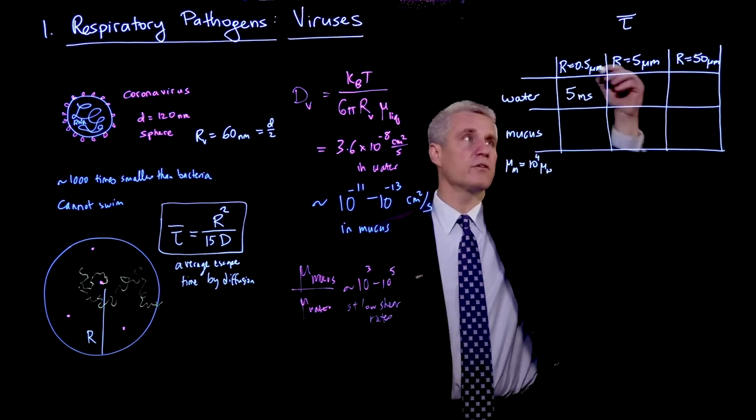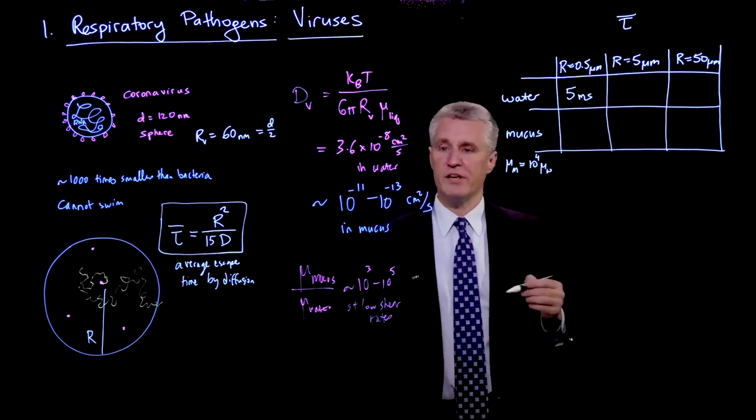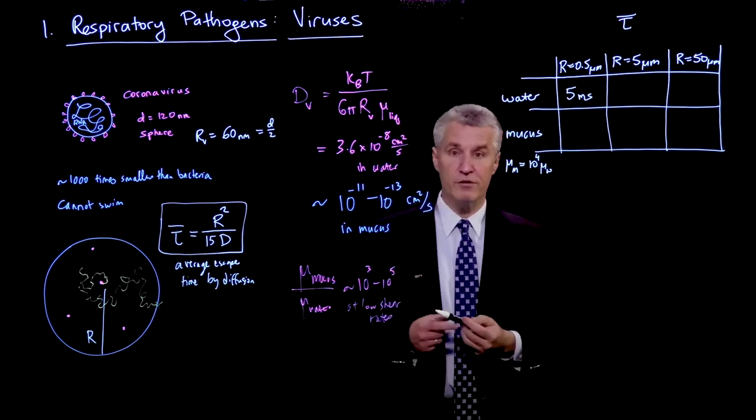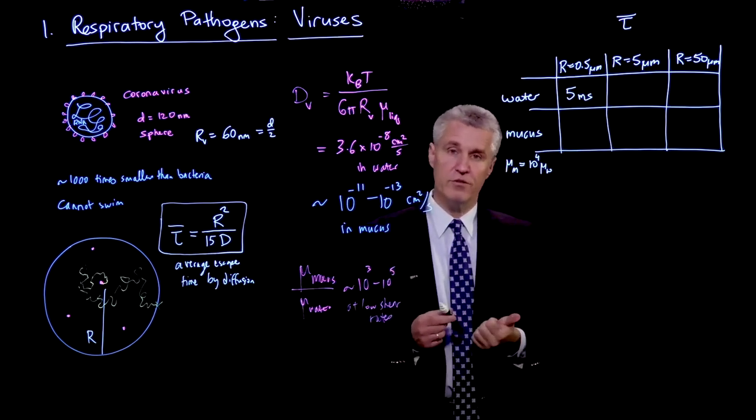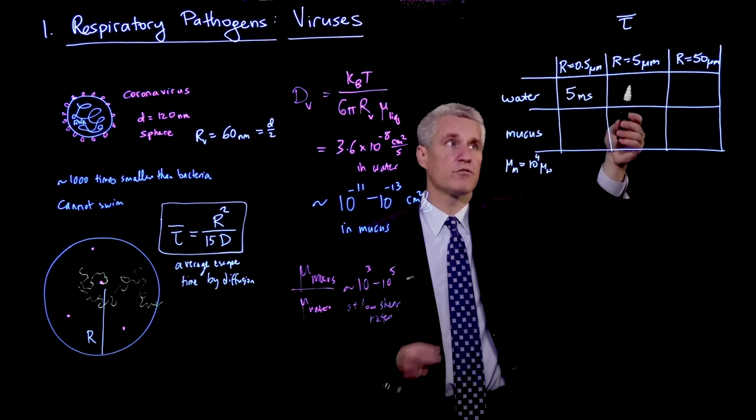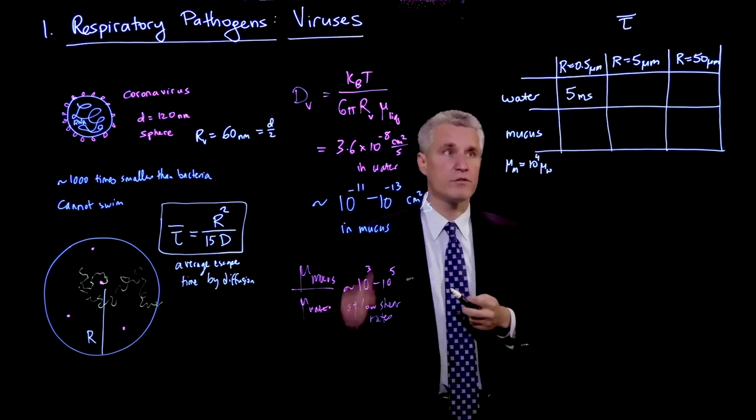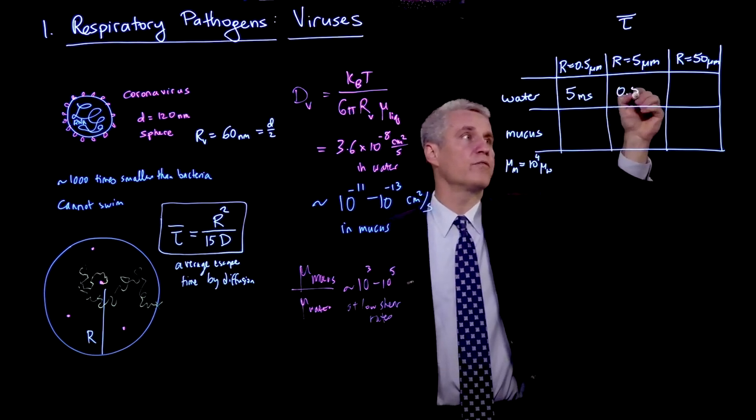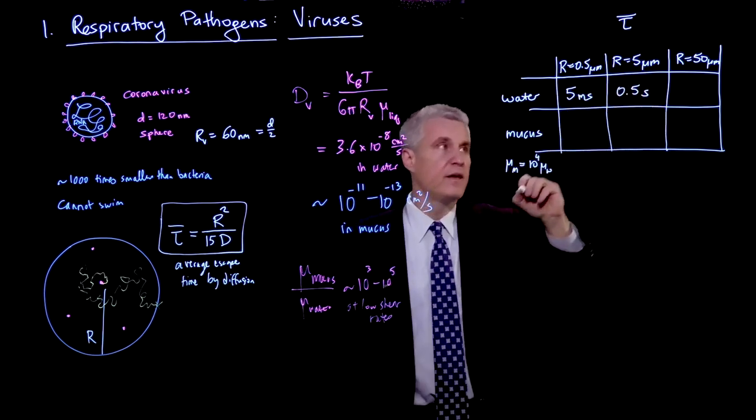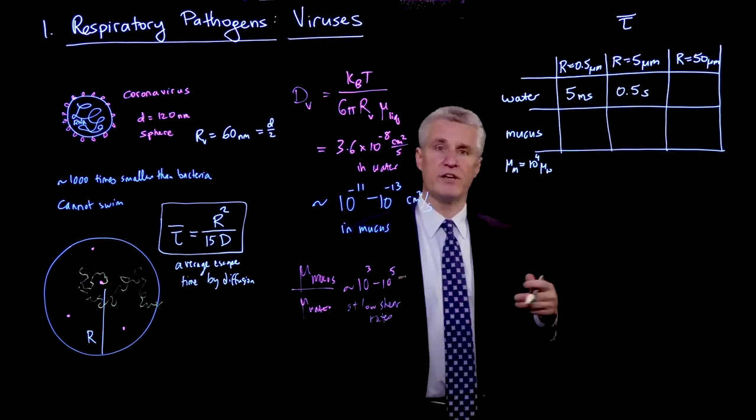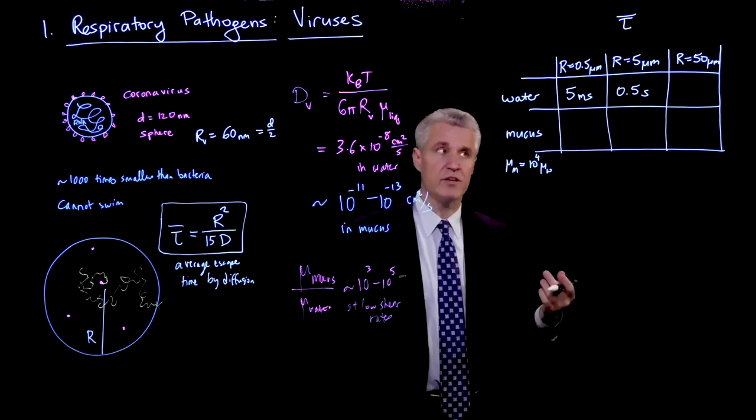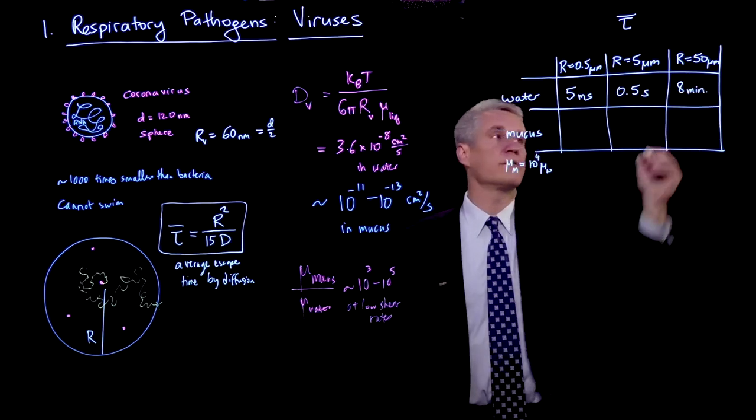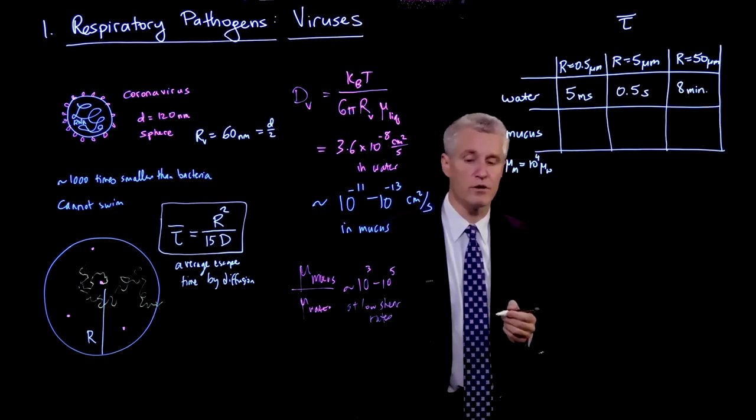Now, if we move in this direction, we're multiplying R by 10. And notice the timescale goes like R squared. So there is a pretty strong size dependence. So as we think of a 10 times larger droplet, it's 100 times longer time. So that would be 500 milliseconds or 0.5 seconds. And if we go another factor of 10, that's another factor of 100 in time. And if we convert seconds to minutes, it turns out to be around 8 minutes for a fairly large drop.